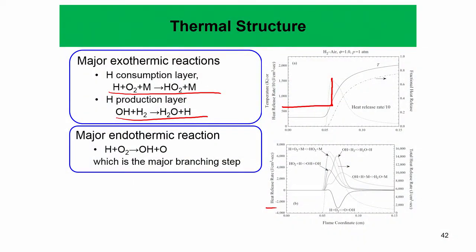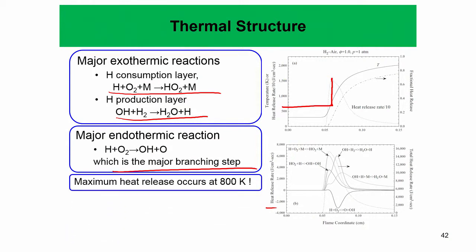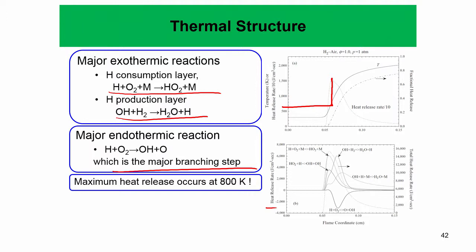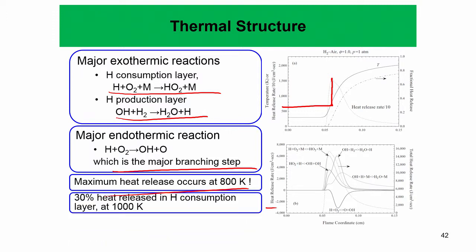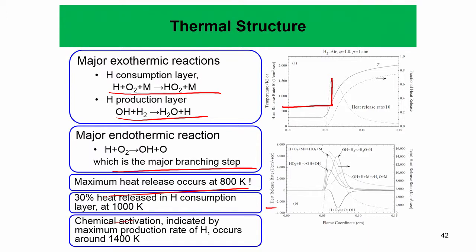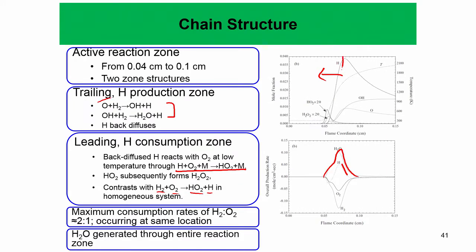The major endothermic reaction here is H + O₂ → H + O, which is essentially the chain branching — a major branching step that helps reactions proceed further. The maximum heat release rate occurs at about 800 Kelvin, the hallmark of the H + O₂ + M three-body termination reaction. About 30% of heat is released in the hydrogen consumption layer at about 1000 Kelvin. Chemical activation, as indicated by the maximum production of H, occurs at around 1400 Kelvin.